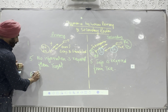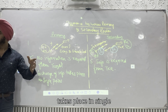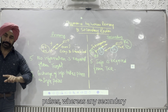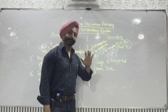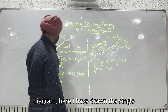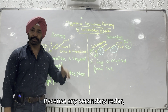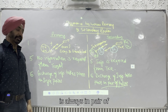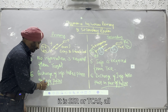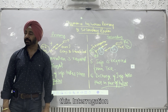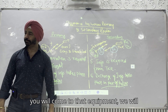In primary radar, exchange of information takes place in single pulses. Whereas in any secondary radar, the interrogation and reply are always in pairs of pulses. Even looking at the diagram — here I have drawn a single pulse; here I have drawn a pair of pulses. Whether it is DME, SSR, or TCAS, the interrogation is a pair of pulses and the reply is a pair of pulses. We will see why when we come to each equipment.